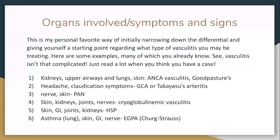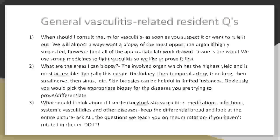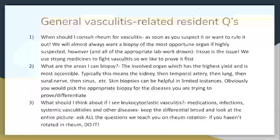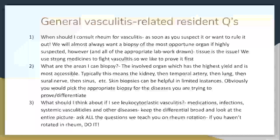Asthma for a long time is usually associated with eGPA. Those are just examples. I work with rheumatology as a consultant, and they'll often ask me when they should consult rheumatology for suspected vasculitis.